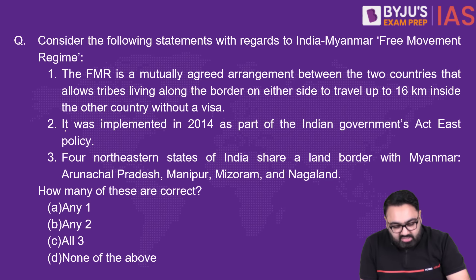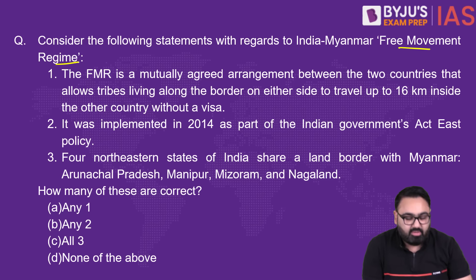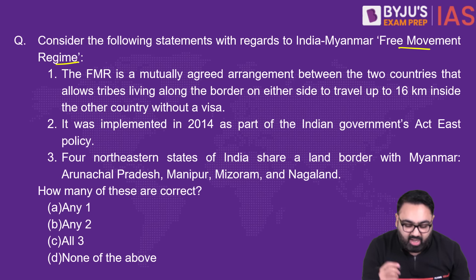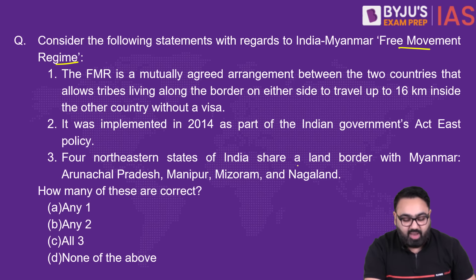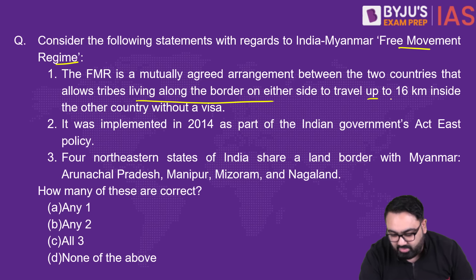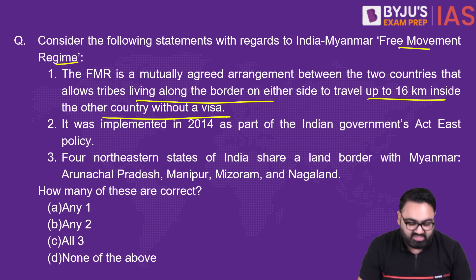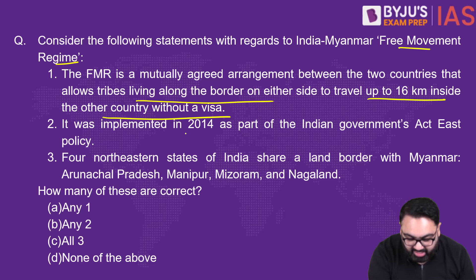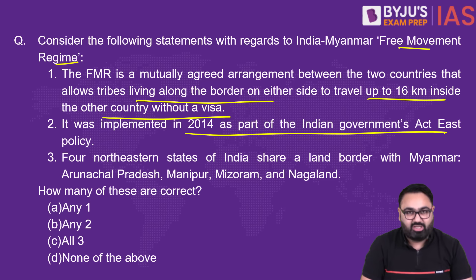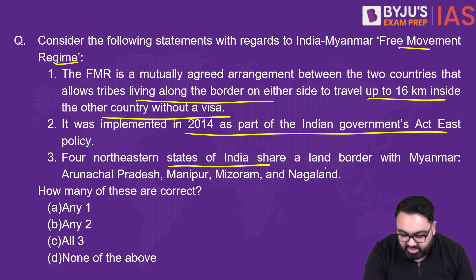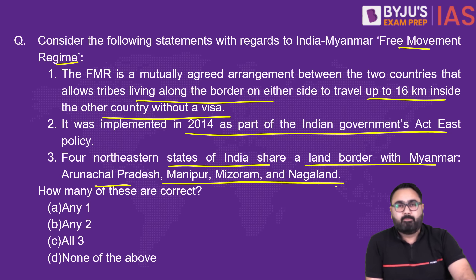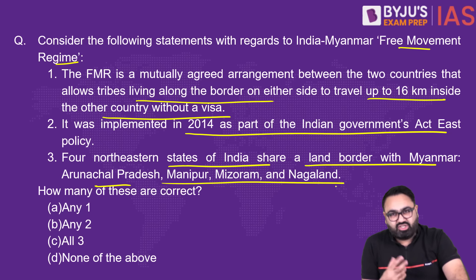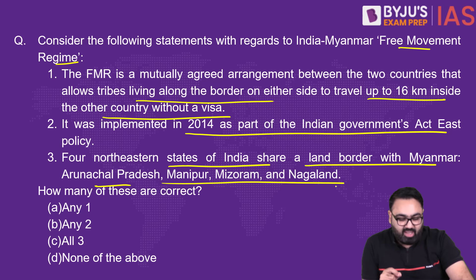Consider the following statements on the India-Myanmar free movement regime. One: the free movement regime allows tribes living along the border on either side to travel up to 16 km inside the other country without a visa. Two: it was implemented in 2014 as part of the government of India's Act East Policy. Three: four northeastern states share a land border with Myanmar — Arunachal, Manipur, Mizoram, and Nagaland. How many are correct? India-Myanmar relations and the free movement regime have been in the news.